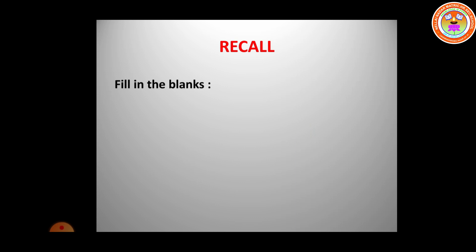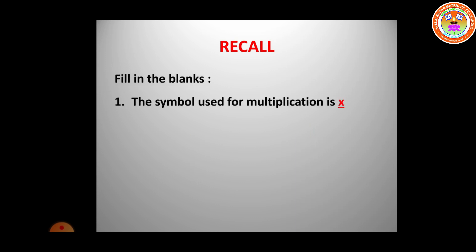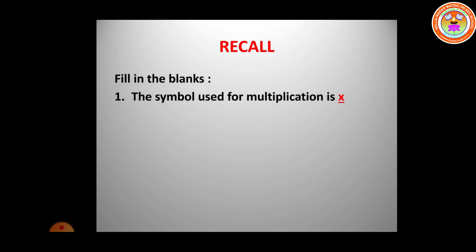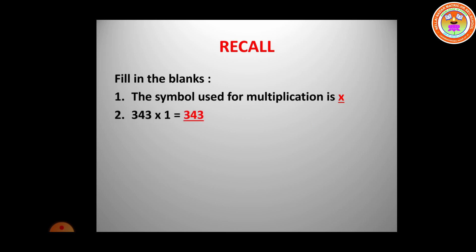First of all, we recall whatever we learned previously. The symbol used for multiplication is this symbol. Three hundred and forty-three multiplied by one is equal to three hundred and forty-three. Any number multiplied by one means the answer will be the same number.